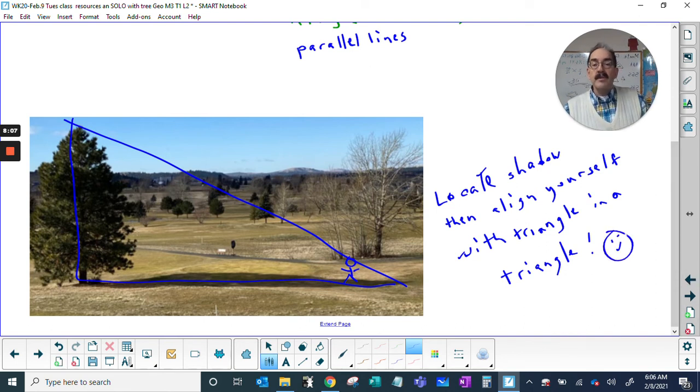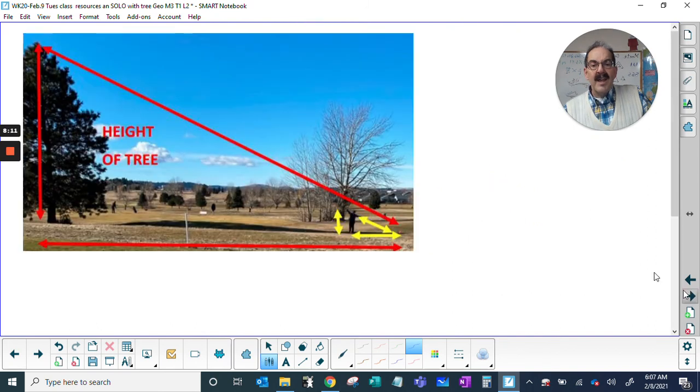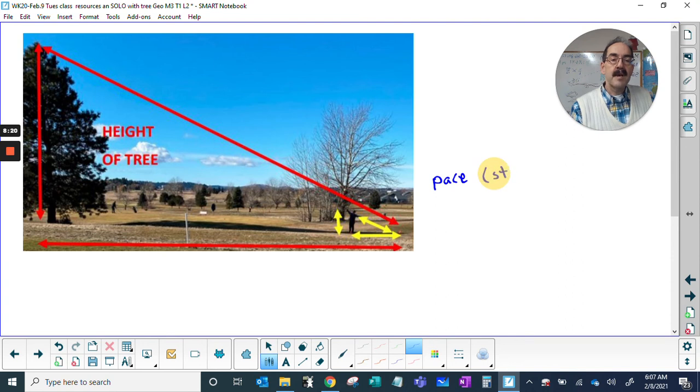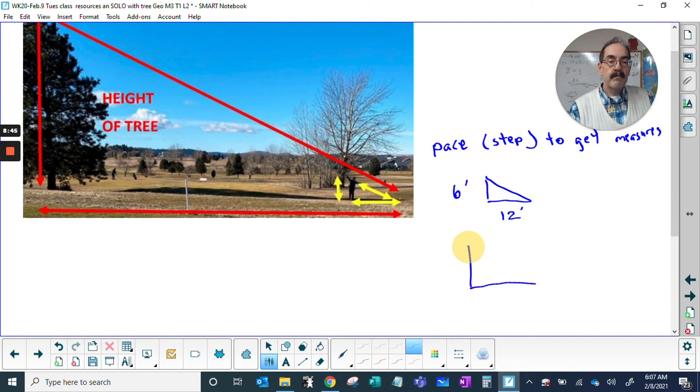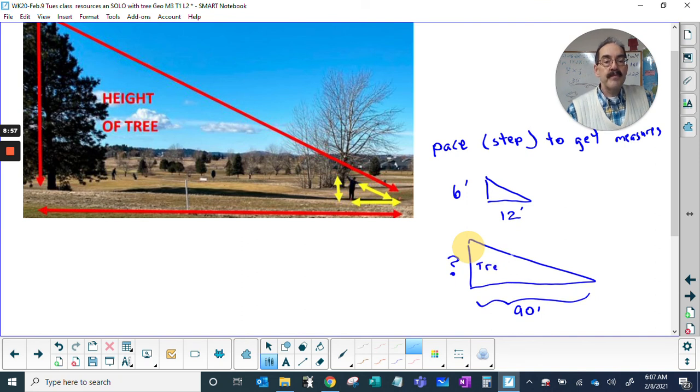So I did that. There's this tree out by the golf course, and now I've got to get some measurements. Pace, step to get measures. In this case, my little triangle: I'm 6 feet tall and my shadow was 12 feet. The big triangle, this turned out to be 90 feet, but I don't know how tall the tree is.